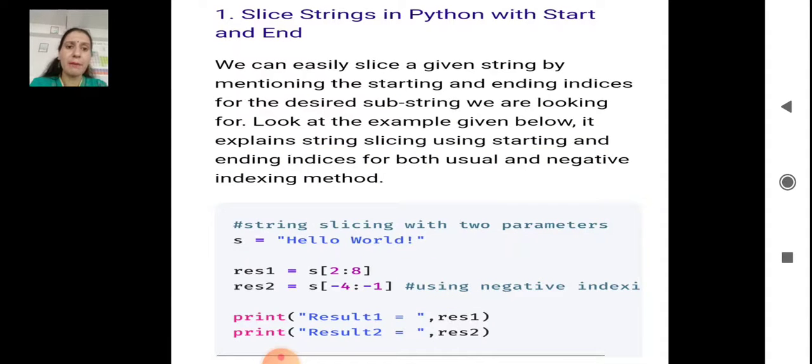In the next example, the start value is minus 4, so we take the index from the backward direction. The exclamation sign is at minus 1 index, D is at minus 2, L is at minus 3, and R is at minus 4. So we start slicing from minus 4 and the stop value is minus 1, and we are taking a step of 1.